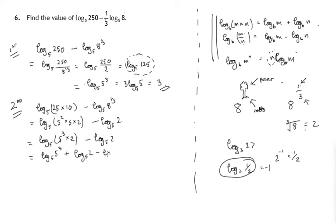And look there's a log to the base 5 of 2 subtracting log to the base 5 of 2. Whatever these are, they're equal. So they vanish. And log to the base 5 of 5 cubed. Bring the 3 down to the front. What power do you raise 5 to to get 5? So 3 times 1, which is 3 as before.